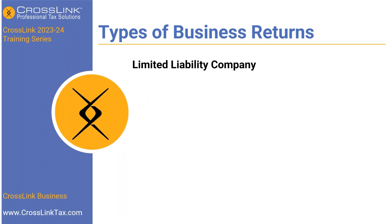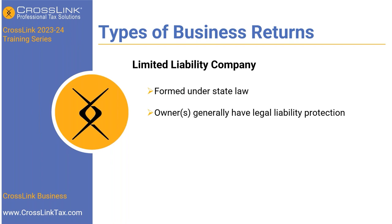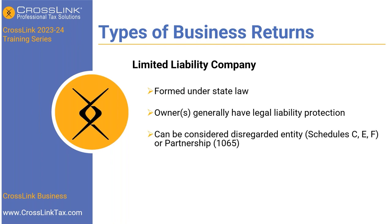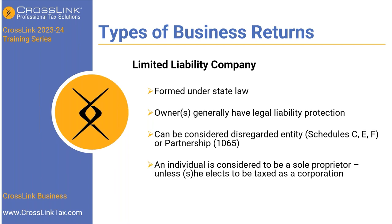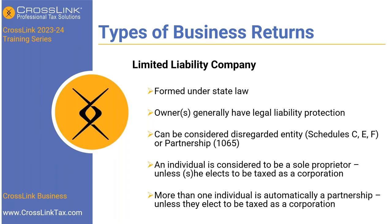The next type of business return is limited liability companies. LLCs are formed under state laws and the owner or owners generally have legal liability protection. They can be considered a disregarded entity — that means Schedule C, E, or F — or a partnership, the 1065. An individual is considered a sole proprietor unless they elect to be taxed as a corporation, and more than one individual is automatically a partnership unless they elect to be taxed as a corporation.